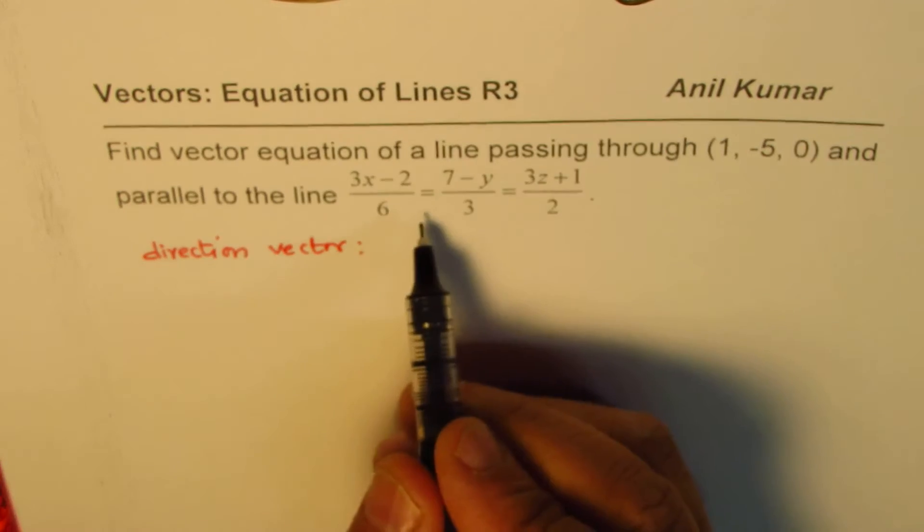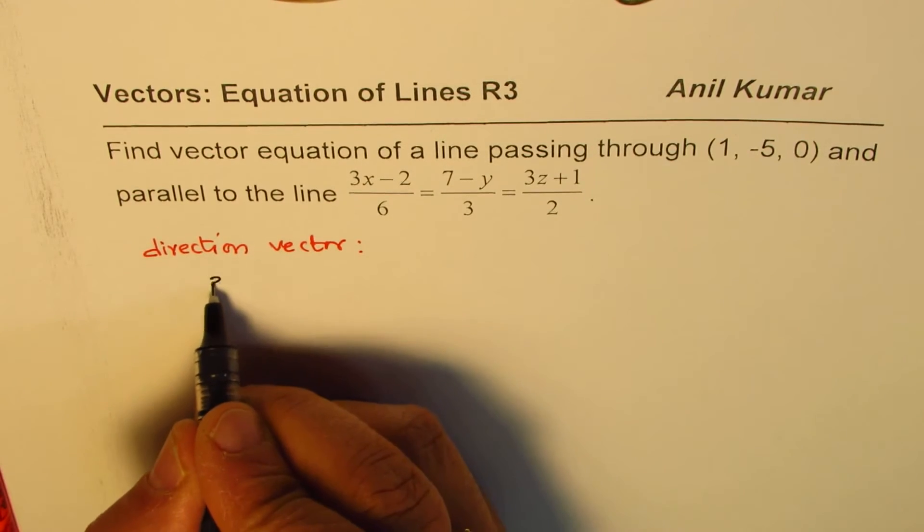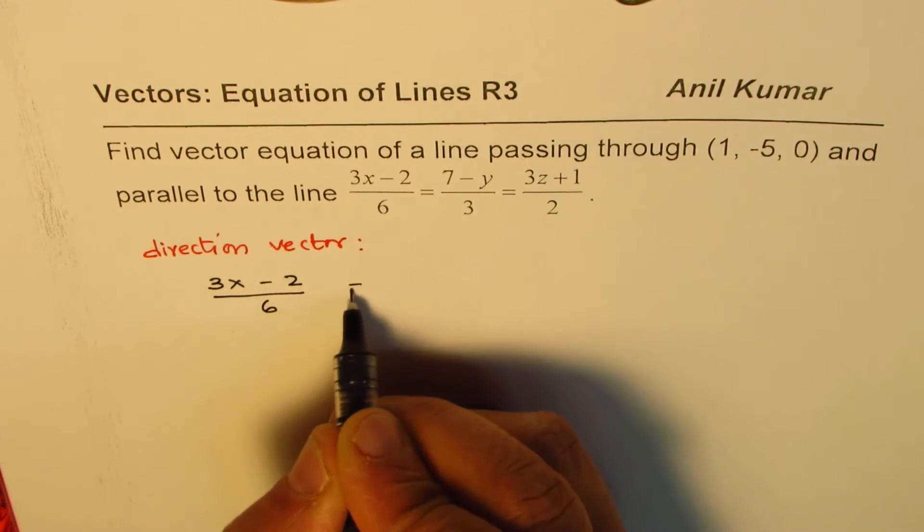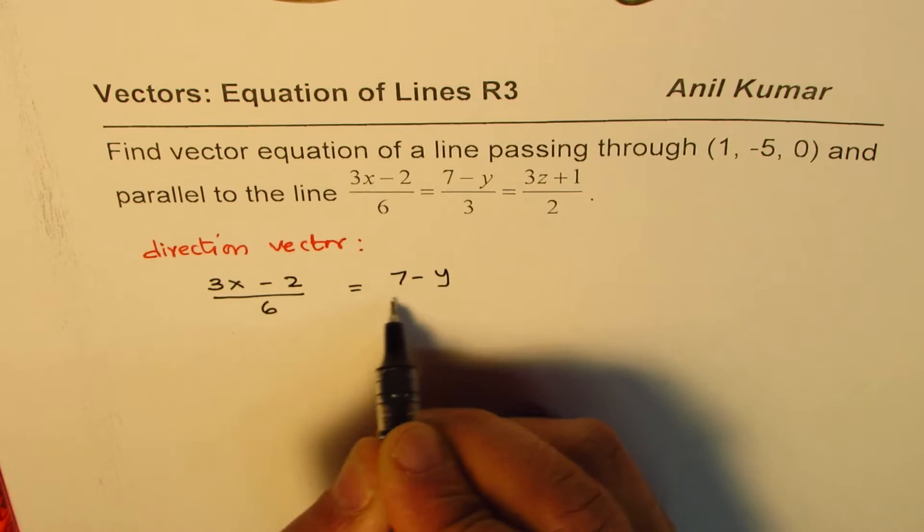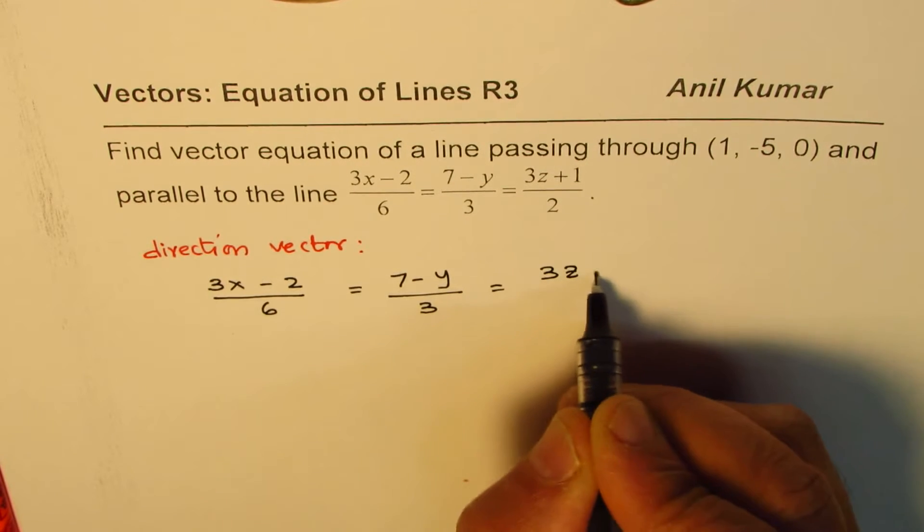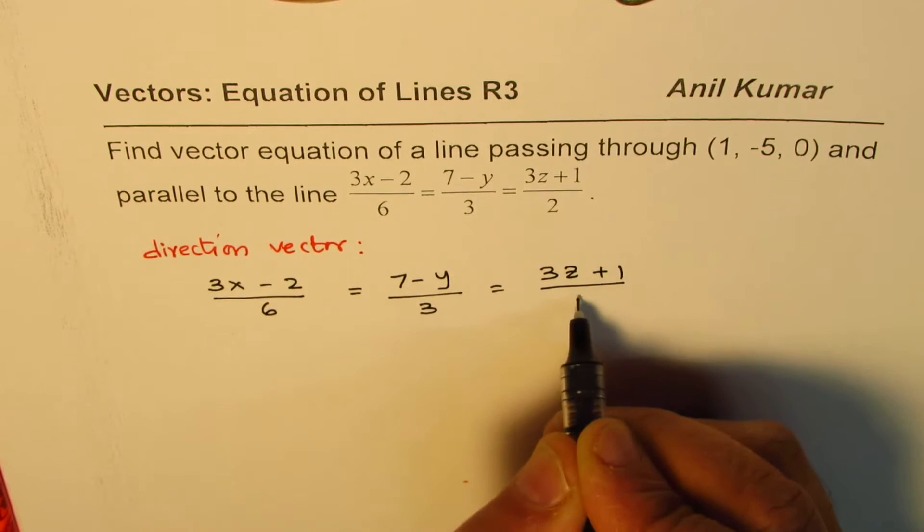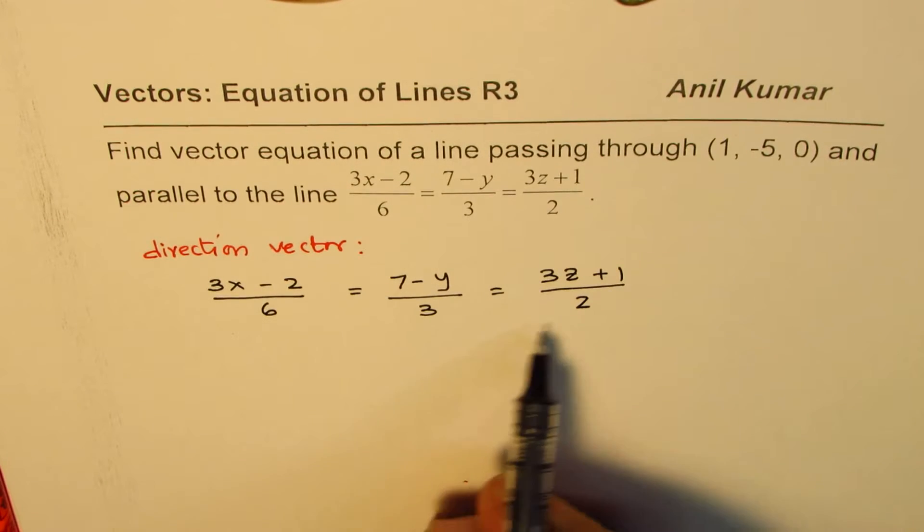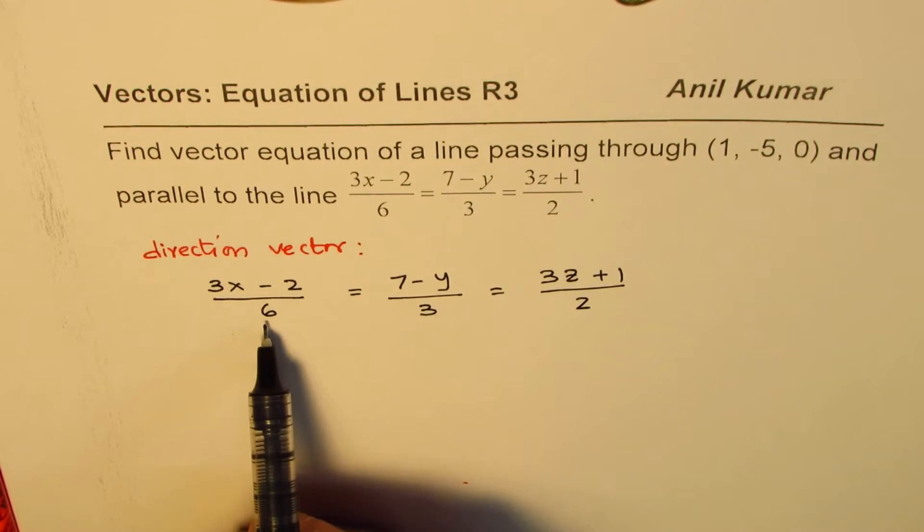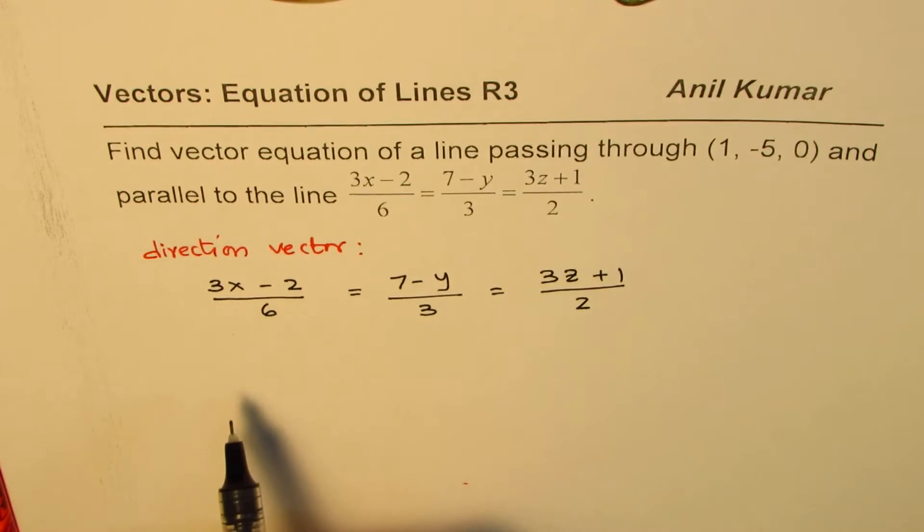So let's rewrite this equation. It is (3x - 2)/6 = (7 - y)/3 = (3z + 1)/2. We should write this in standard format, (x - x0)/d1, right? So that's the format we're looking for.